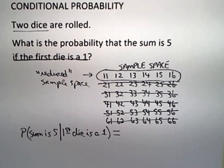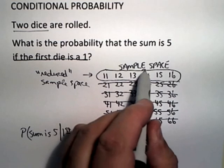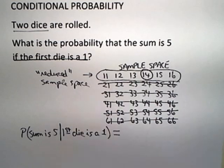Now, from that reduced sample space, you want a sum of 5. But if you scan through, there's only one die roll that gives you a sum of 5, and that's 1, 4.